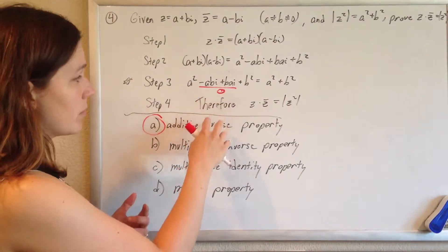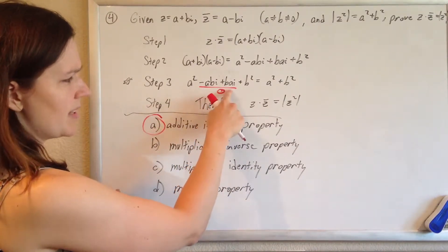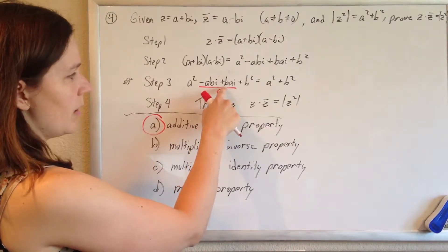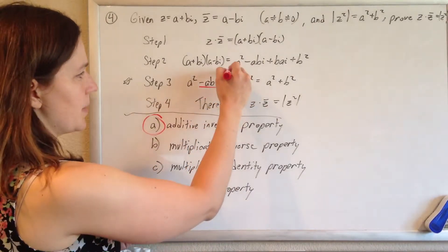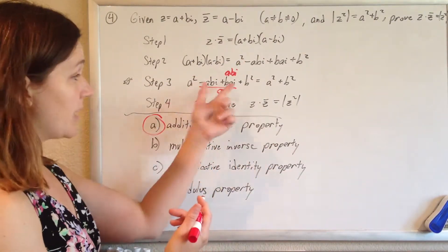There's a couple other formulas at work here. To be able to do this, they did have to recognize that BAI is the same as ABI, and that's a little bit of a commutative property of multiplication.